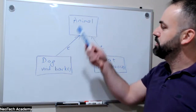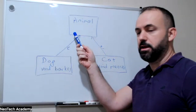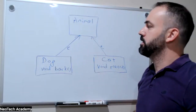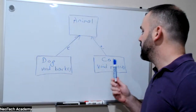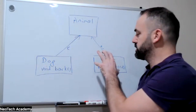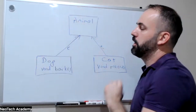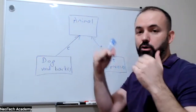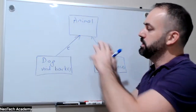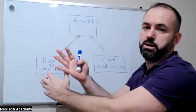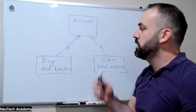We have a simple example: an Animal class, a Dog class extending Animal, and a Cat class also extending Animal. The Dog class has a bark method and the Cat class has a meow method. We're going to create objects of Cat and Dog, store them in an array of Animals, and then see how we can downcast — iterating the array, downcasting dogs to make them bark and cats to make them meow.